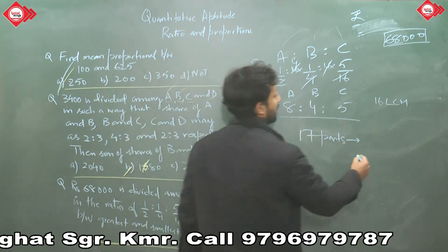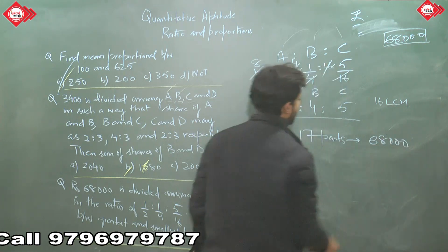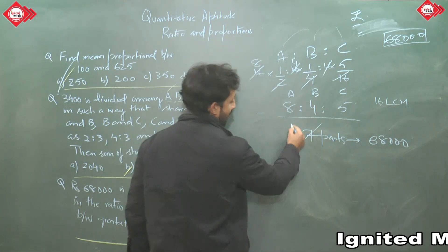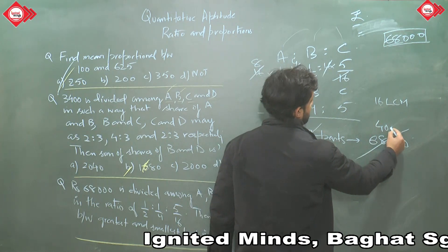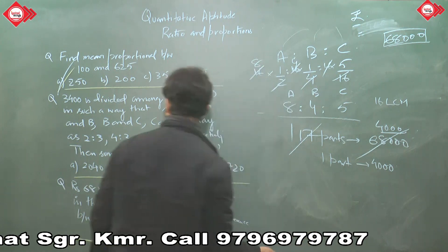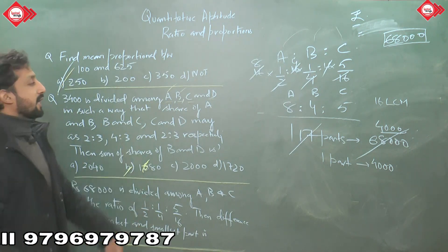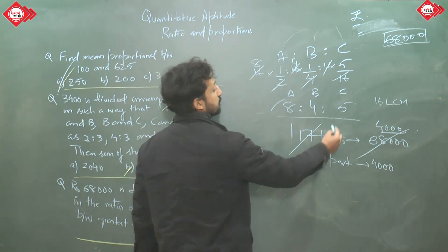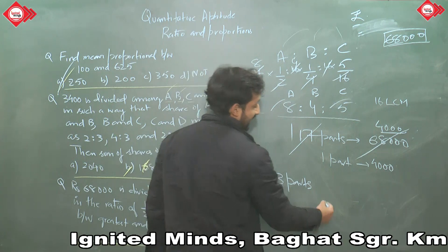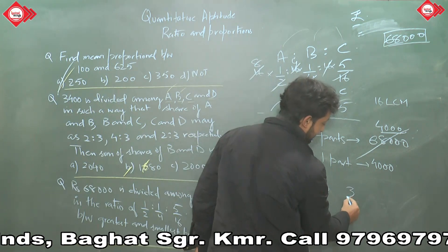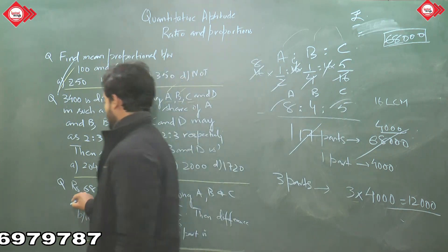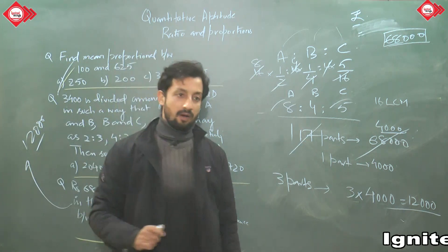17 parts = 68,000 rupees, so 1 part = 4000 rupees. The greatest share is A with 8 parts, the smallest is B with 4 parts. Difference = 8 − 5 = 3 parts (greatest minus smallest comparing A and C). 3 parts × 4000 = 12,000 rupees. The answer is 12,000 rupees.